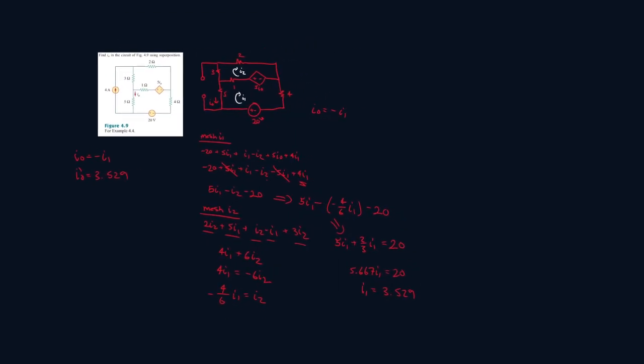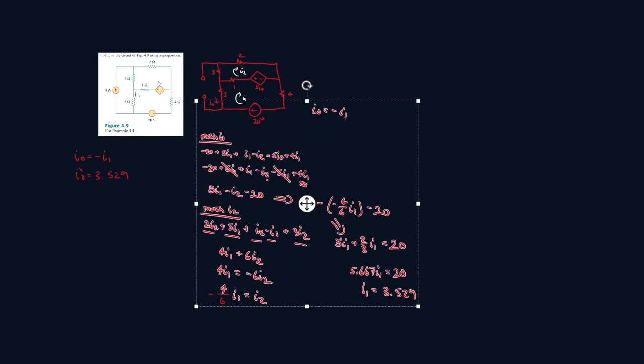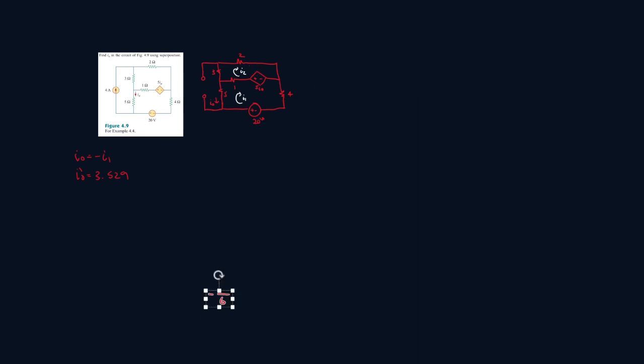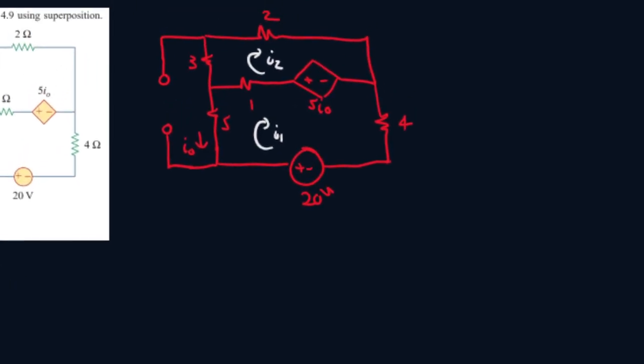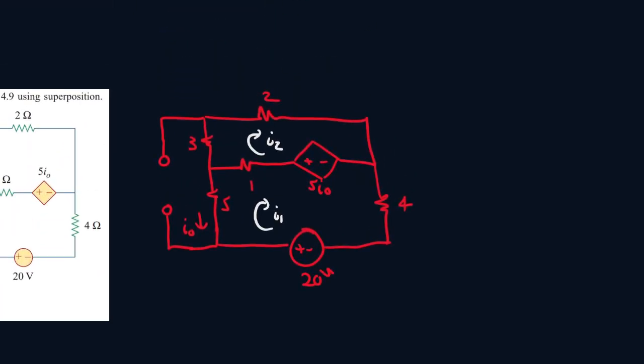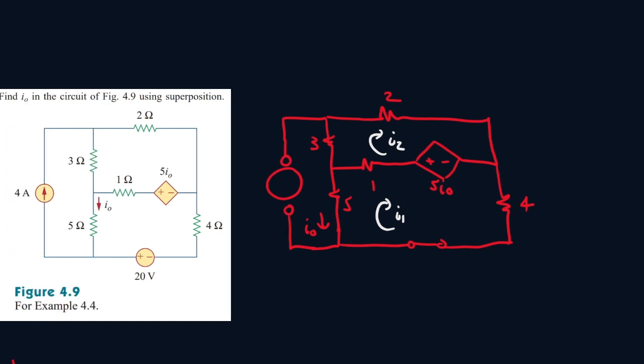Now let me erase all of this. We're going to redo this whole circuit again. But this time, we're turning off this. So when you turn off a voltage source, it's a closed wire,